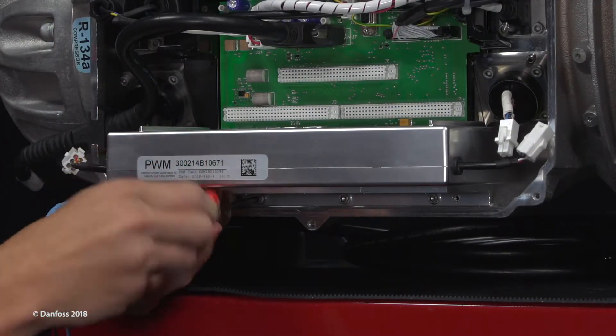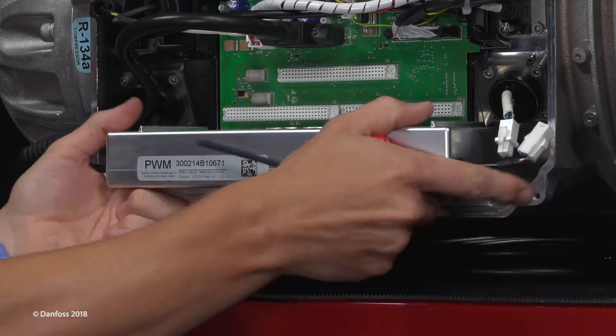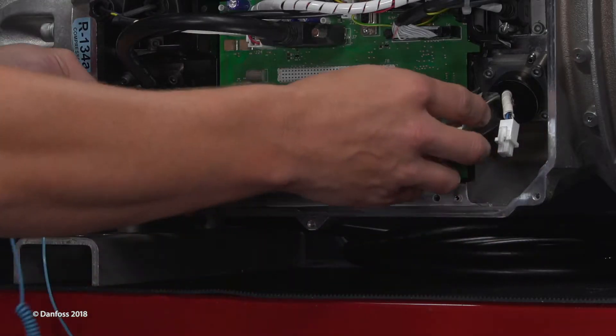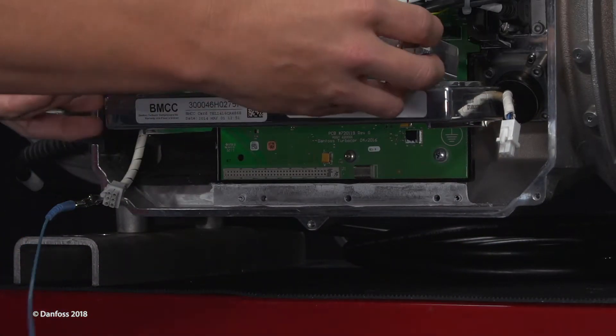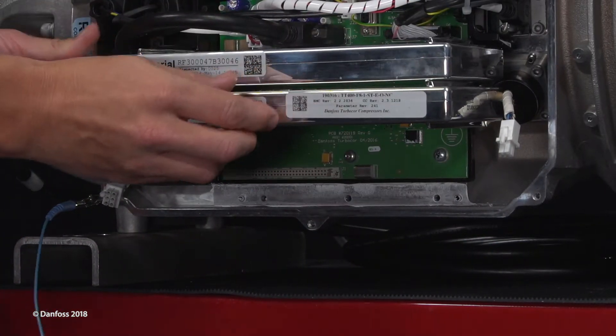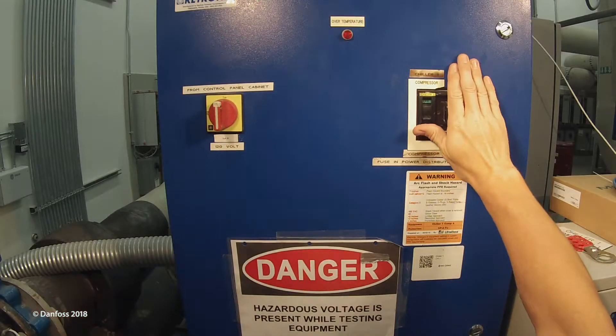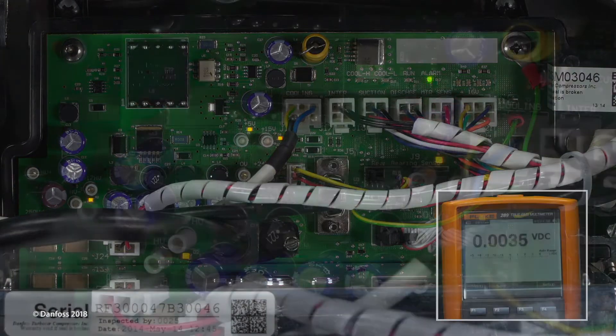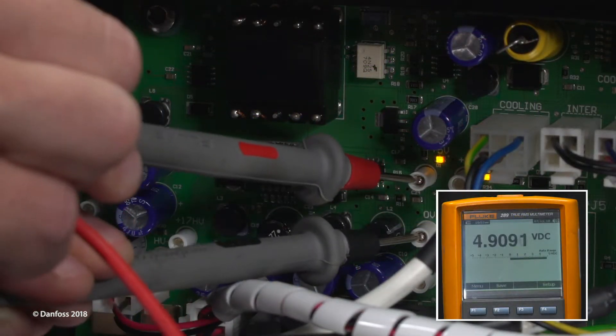Remove the screws that hold the PWM to the compressor and gently pull it out of the backplane connector. Carefully install the BMCC and serial driver. Apply power to the compressor, wait for the compressor to complete the startup sequence, and verify the voltage test points on the backplane.